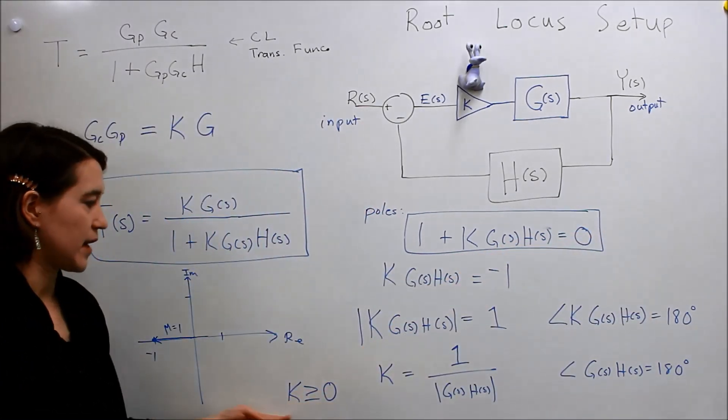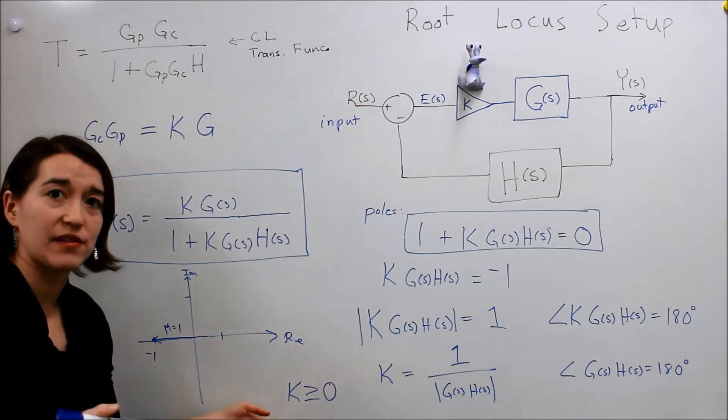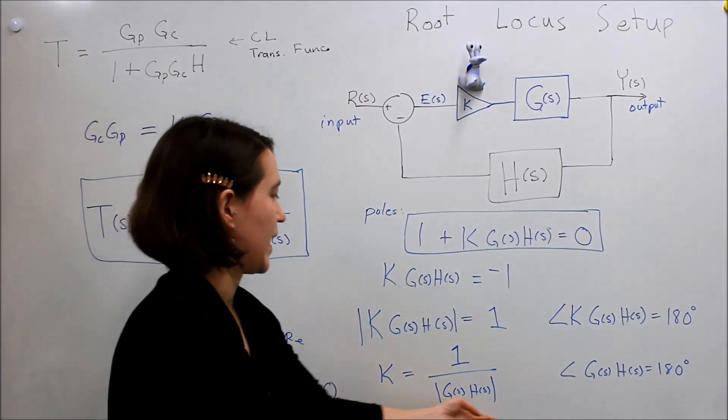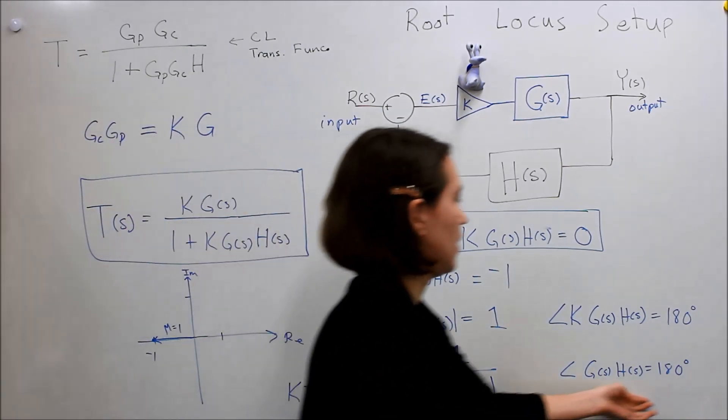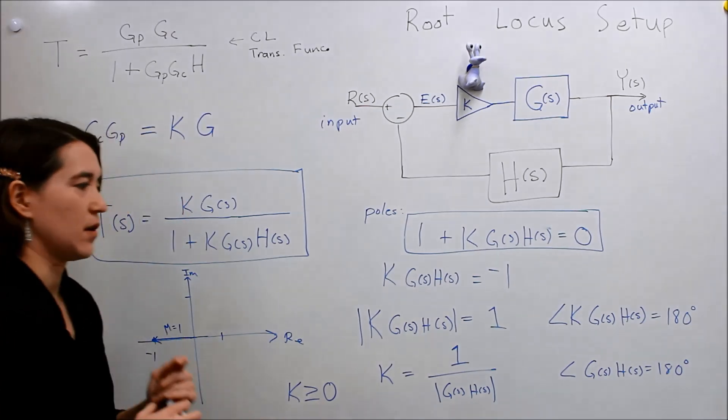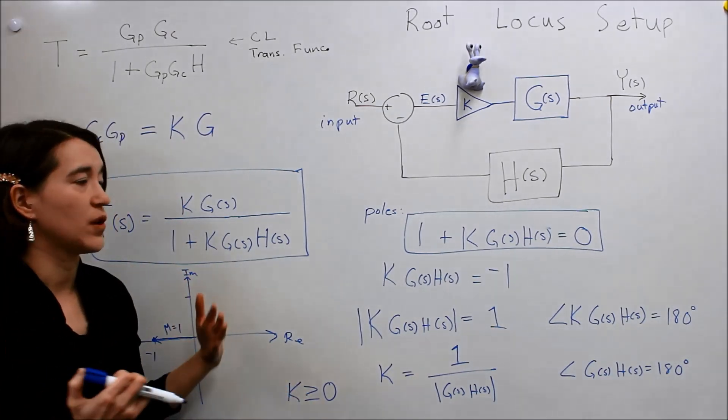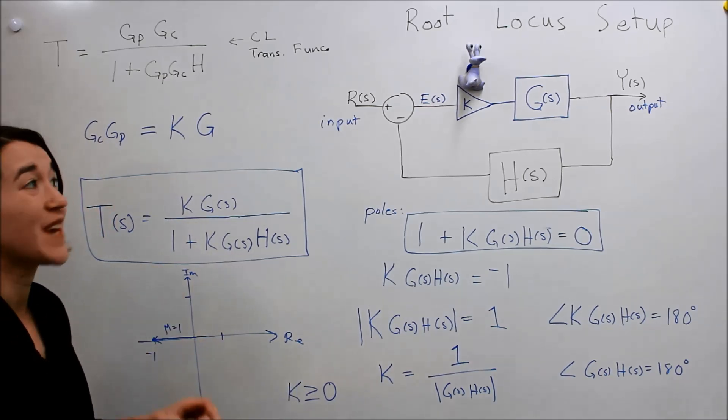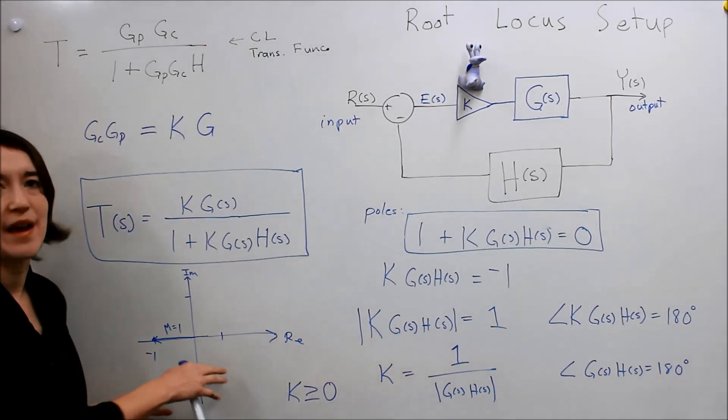Since we decide that we constrain K to be positive values, and, of course, the scalar, we can also make these conclusions about our system. So, this will help us find the poles. And, in the next one, we'll look at how to actually draw the root locus, the movement of the poles as K changes on the S plane.